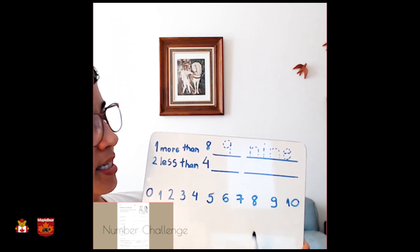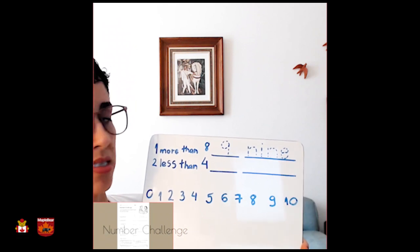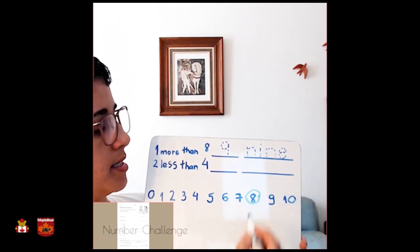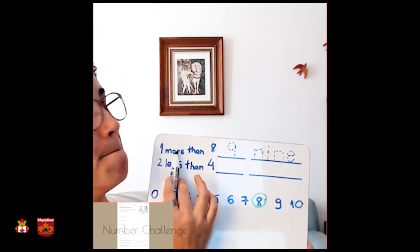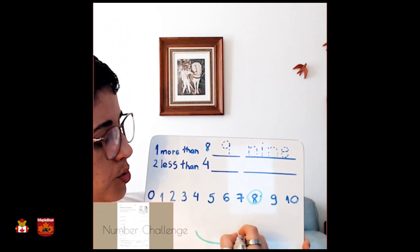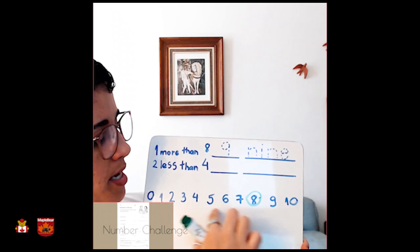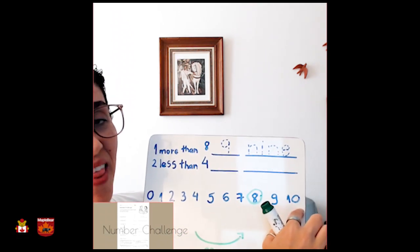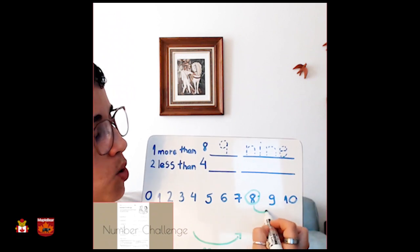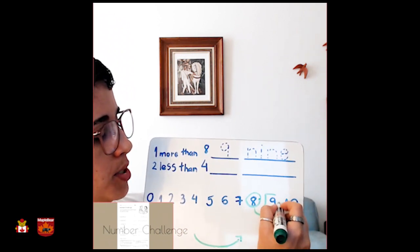Number eight. Let's find the number eight here. Where is the number eight? Do you see it? Yes? Number eight. So, one more. It means we're going to go to this direction here. One more, okay? We add numbers. So, one more. We jump one. And we have number nine.